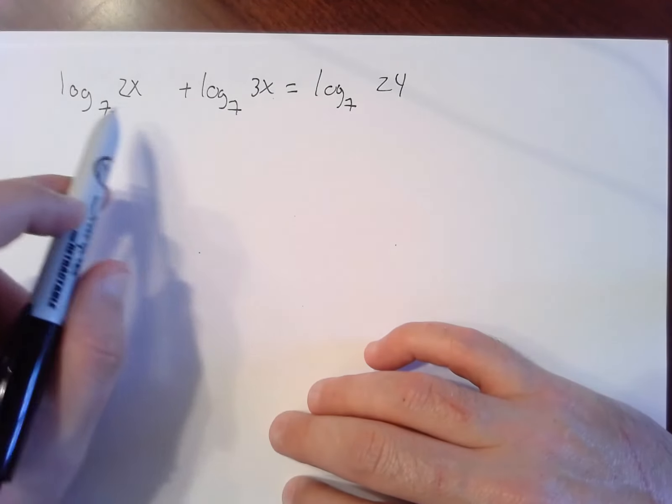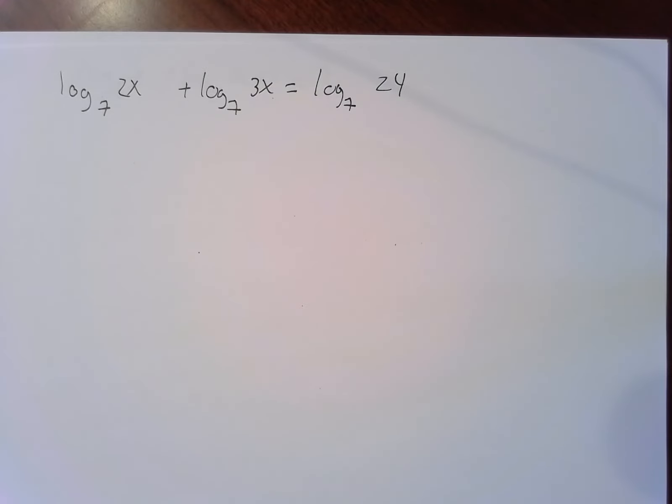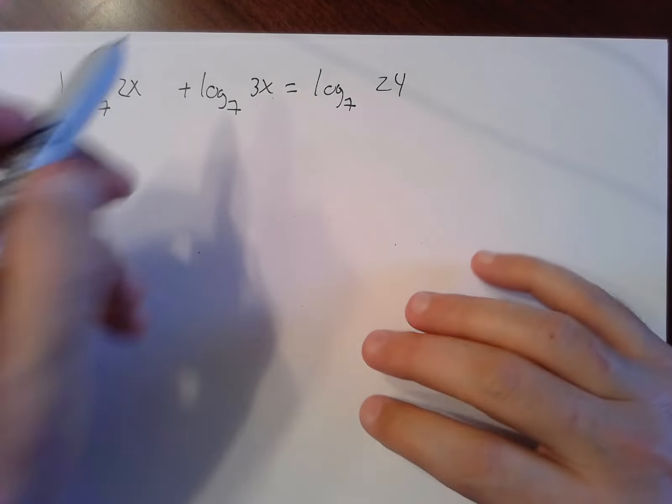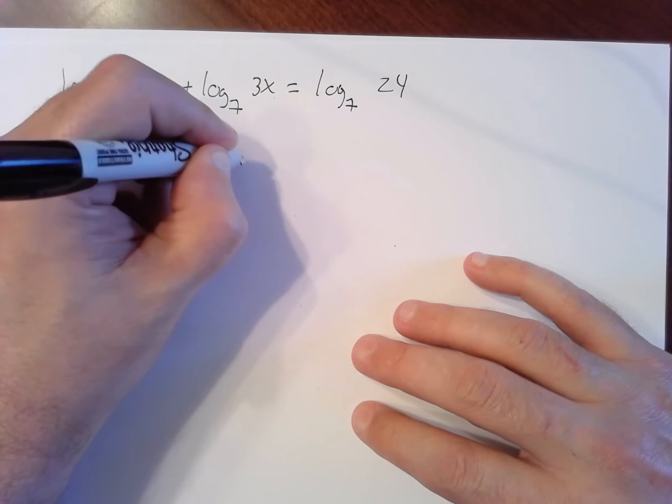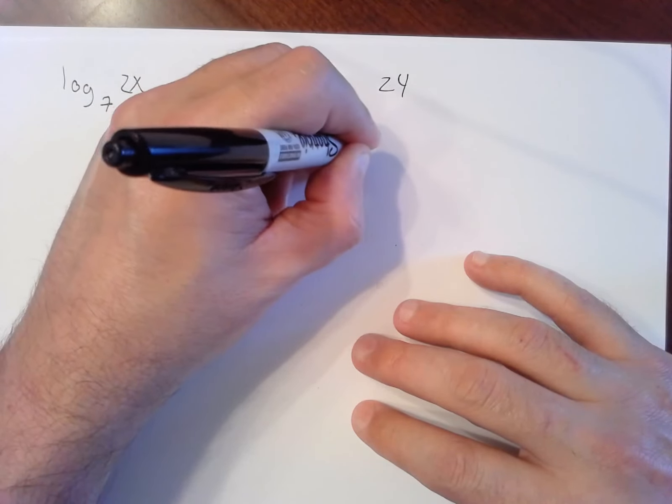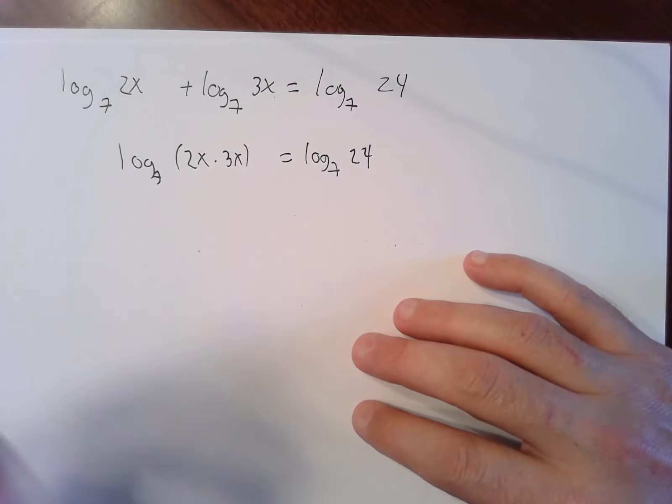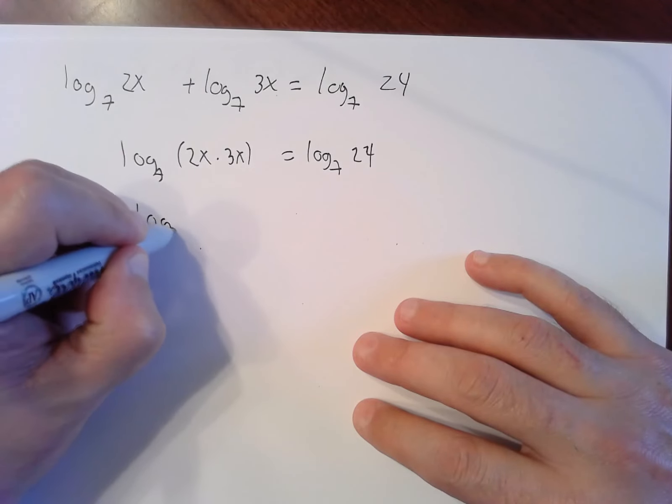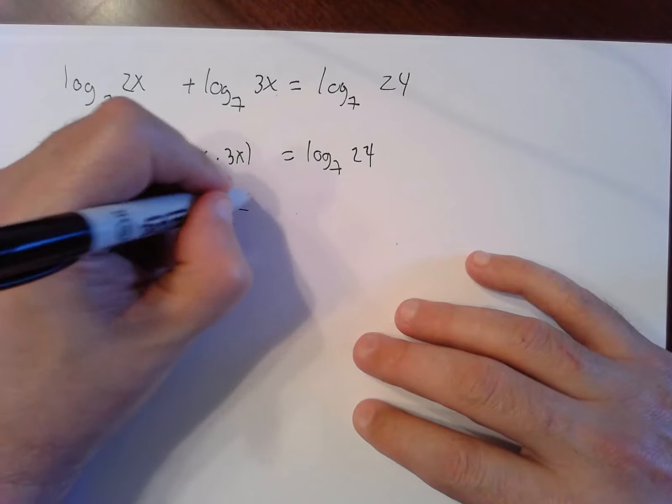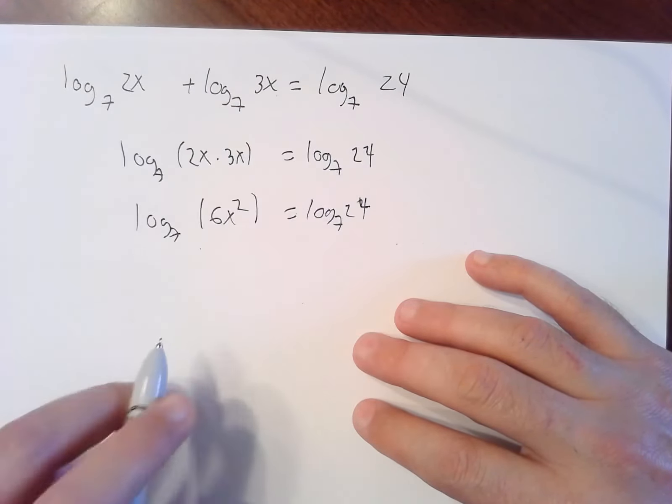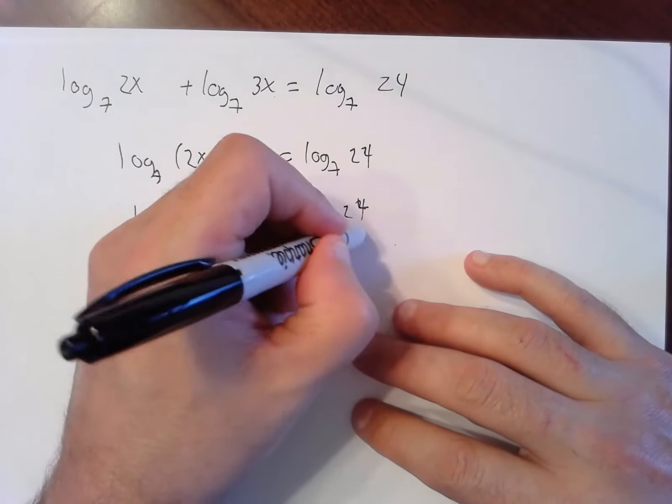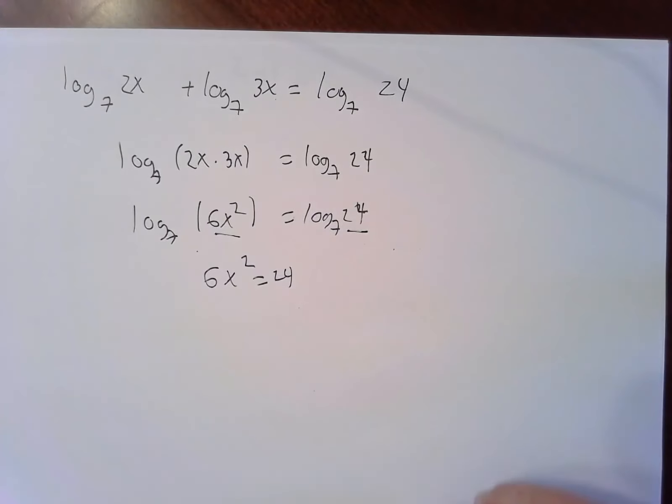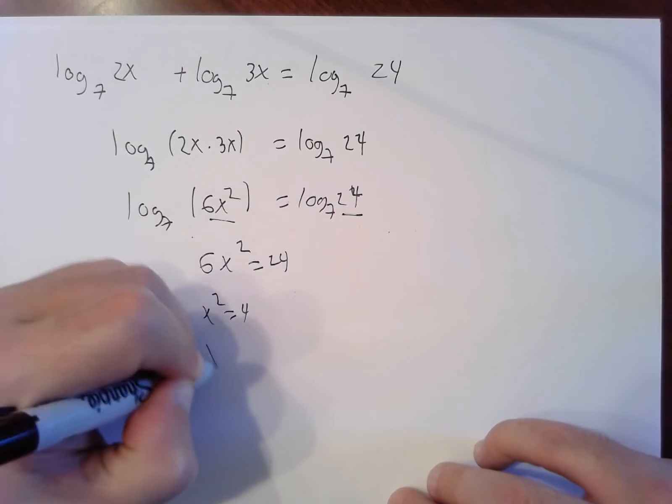Let's look at another one. First thing we notice is everybody's a log. My goal is to get log, one single log, equals one single log. So I have multiplied, added outside on the left, that will become multiplied inside. I got a couple of choices here. I'm going to clean that up. 2x times 3x of course is 6x squared equals 24. Now I have log equals log, one single log equals one single log. Now I can set the insides equal.